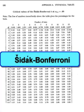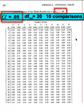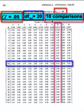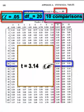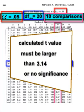So back to the table. There's the information we need: alpha, degrees of freedom, number of comparisons. First of all, make sure you're on the right page for the alpha level — each page has a different alpha level. Degrees of freedom means you go to the 20th row, and the number of comparisons is the top row. So we're in the column for 10 comparisons, and where they intersect, that's going to be your new critical T value. When you run a T-test between two group means, your calculated T value has to be larger than 3.14 or it's not going to be significant.